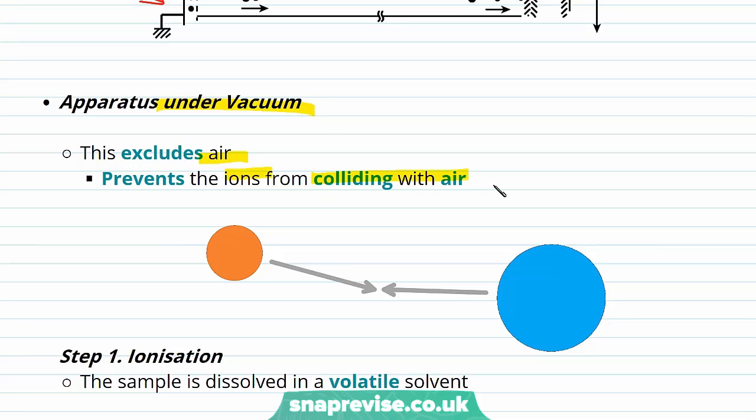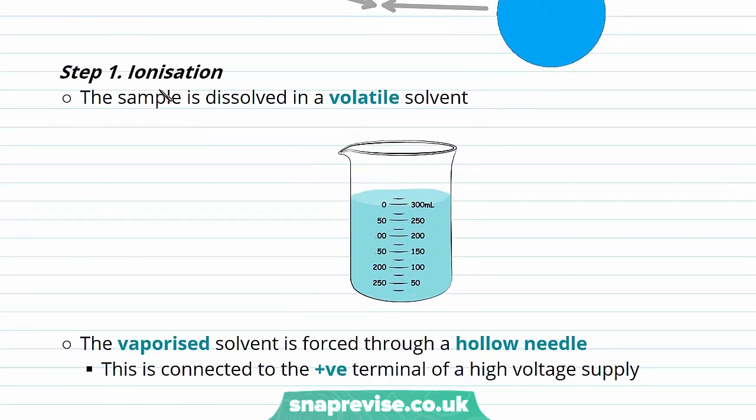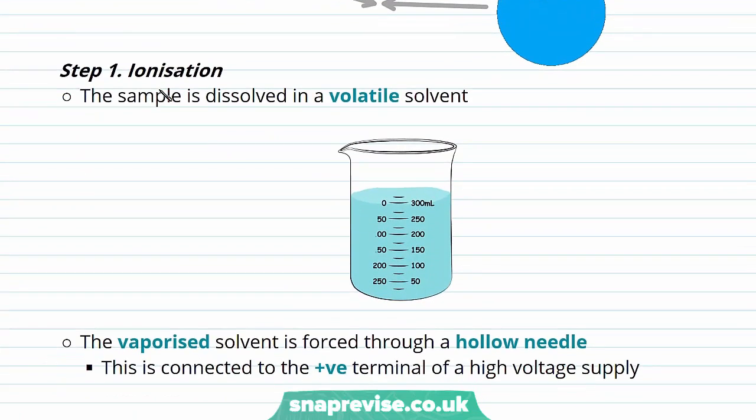So now we know our operators under air, what exactly happens? Well the first step is we have to form those ions, the process of ionization. We take our sample and we dissolve it in a volatile solvent. This solvent vaporizes easily.